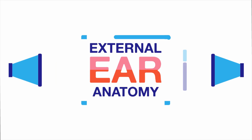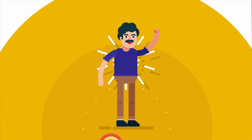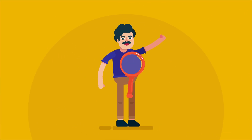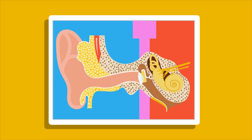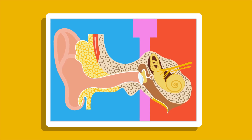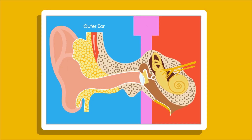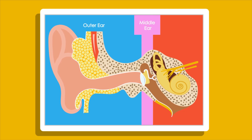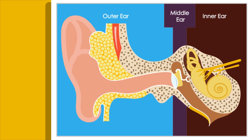Today we are going to learn about the anatomy of the external ear. The ear is divided into three parts: External Ear, Middle Ear, and Internal Ear. The external ear is again divided into three parts.